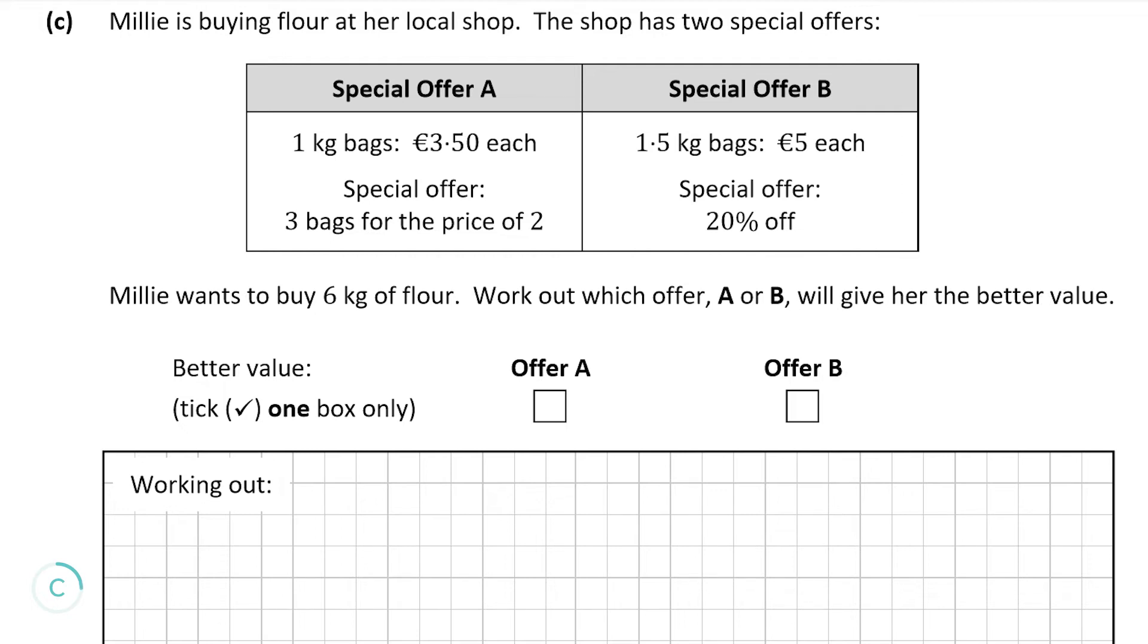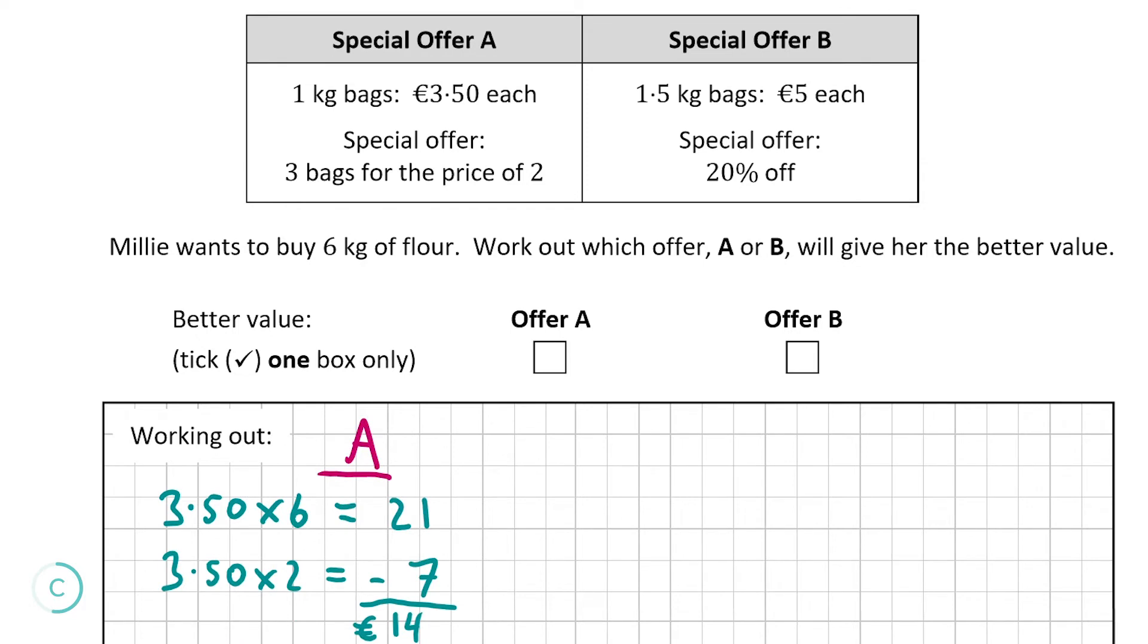For special offer A we're going to work out how much it'll cost her to buy 6 kg as that's how much she wants to buy. She'll have to buy six bags, so it'll be €3.50 by 6. €3.50 by 6 is €21. However, remember for every three bags she gets two free. So she's bought six bags which means she'll get two bags free. €3.50 by 2, we're going to minus that, which is €7. So €21 minus €7 is €14. It's going to cost her €14 to buy 6 kg of flour with special offer A.